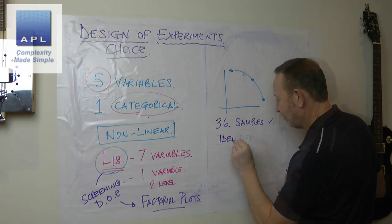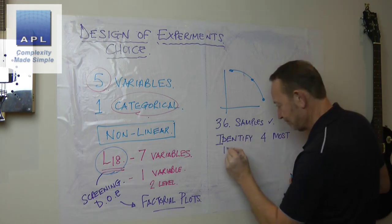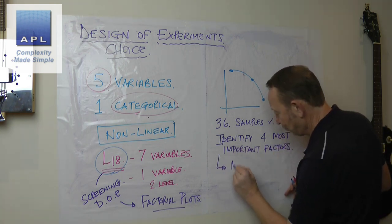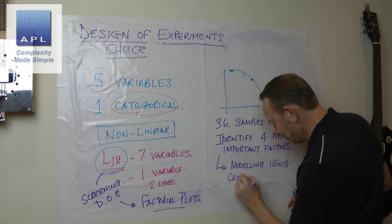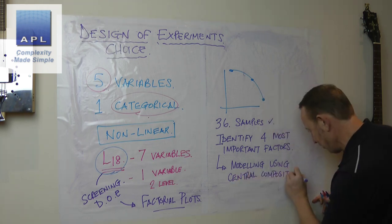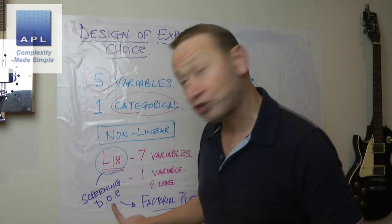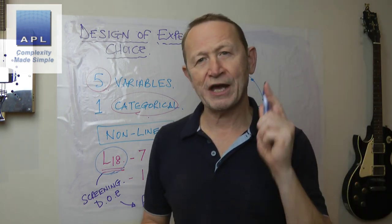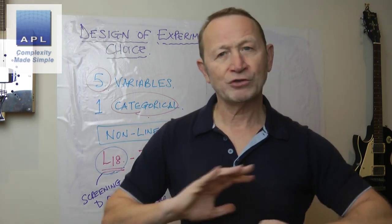I would identify the four most important factors, and then I would model using the central composite design. So I'm going to end up doing two DOEs here, Mohammed. We're going to do a screening DOE, then we're going to model. Now, in your question, you did say I want to model this, and that's too much.